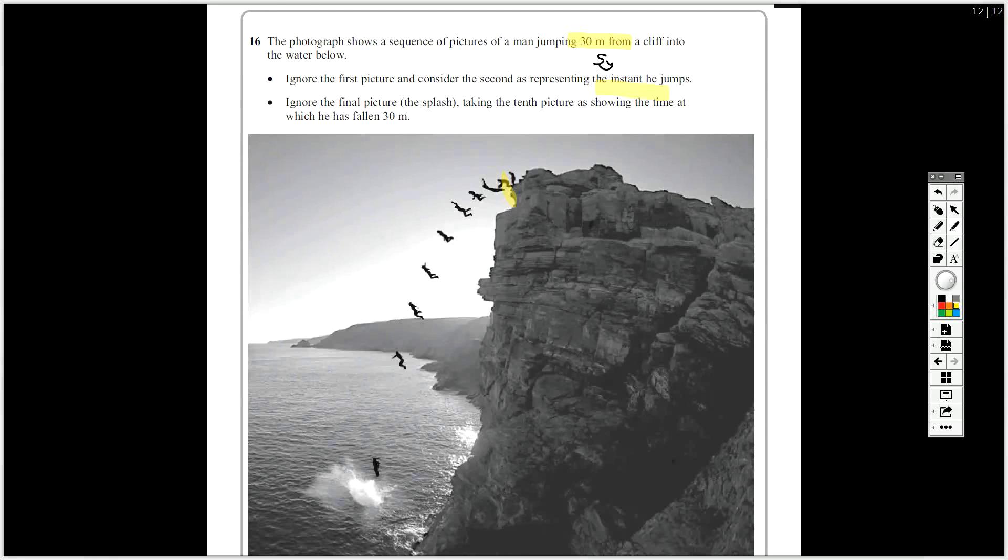But the tenth picture here, so 1, 2, 3, 4, 5, 6, 7, 8, 9, 10, this one is 0, this one is at 30 metres, so if you think about that, this is the point at which 30 metres, and this is 0 metres.